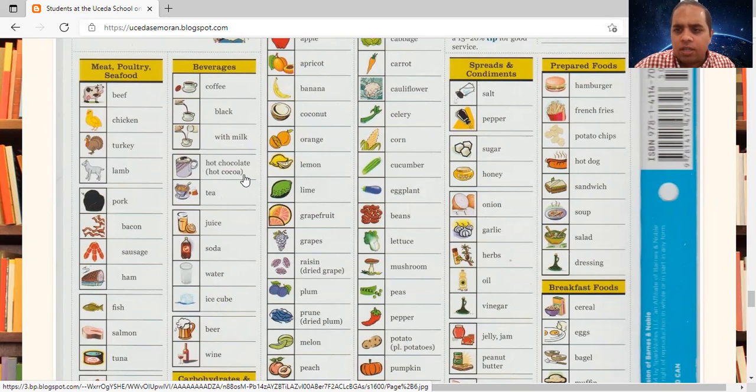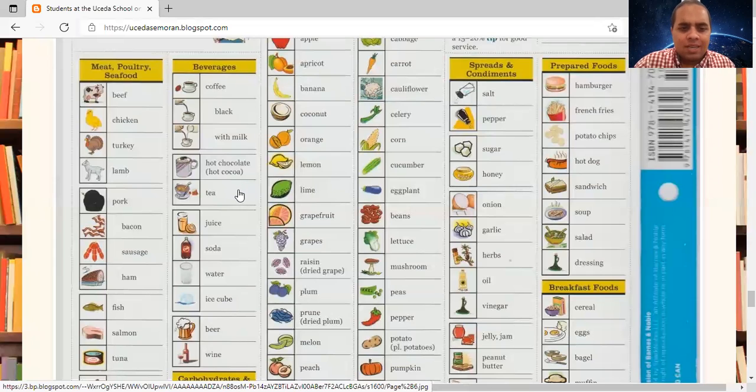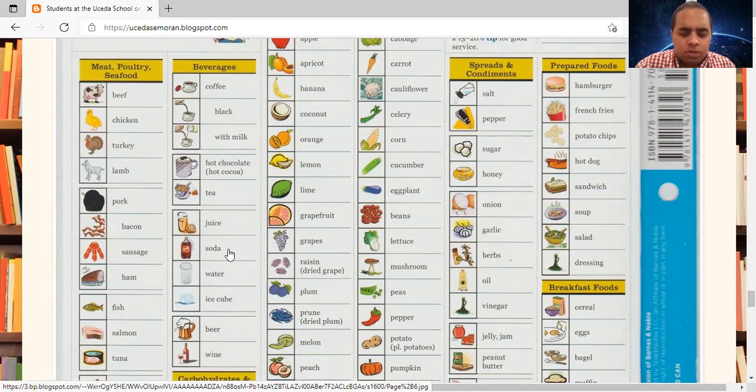You can say hot chocolate or hot cocoa. Tea. Juice. Soda. Water. Ice cube. Beer. Wine. Again, these are beverages. Beverages are the same thing as drinks.